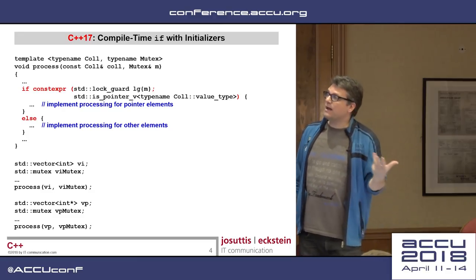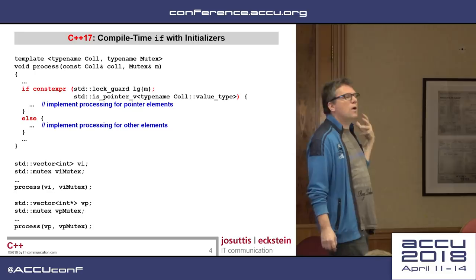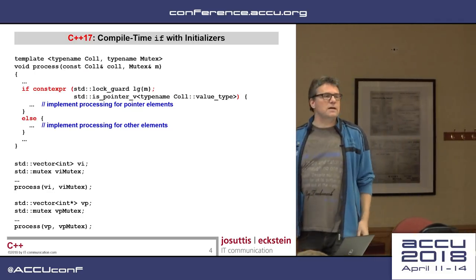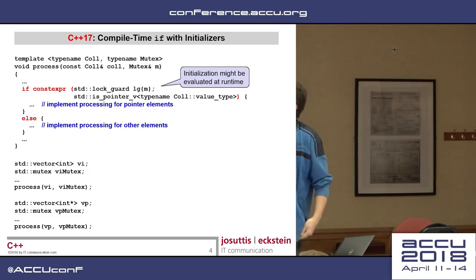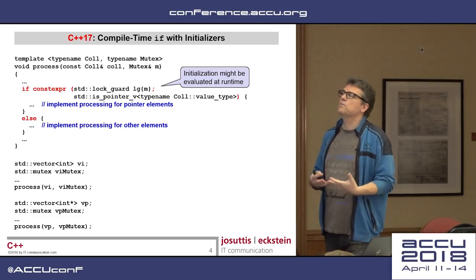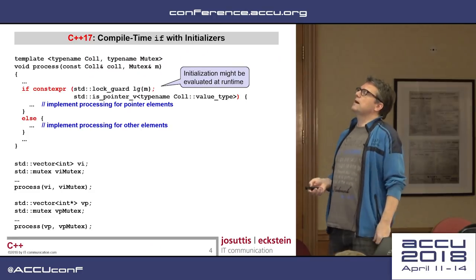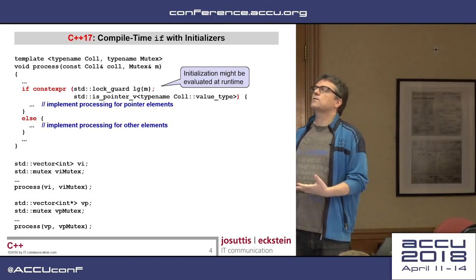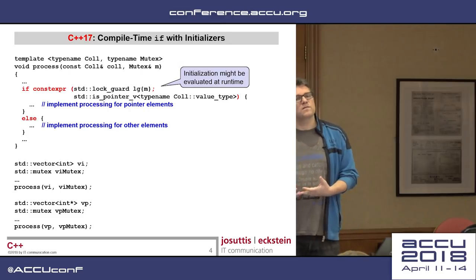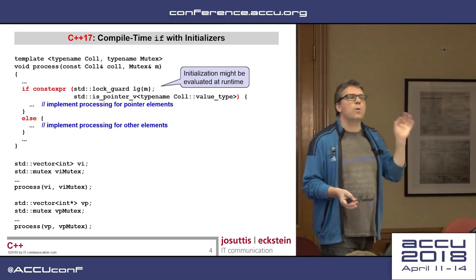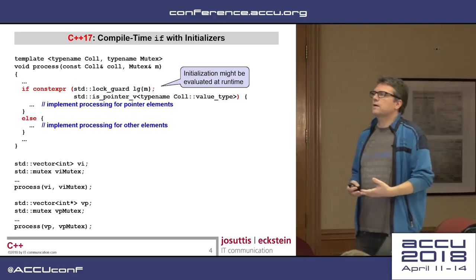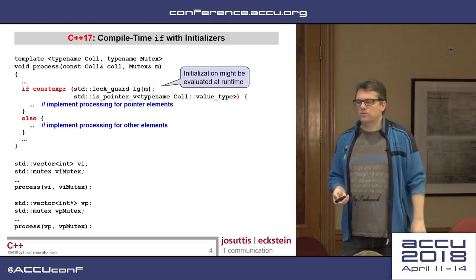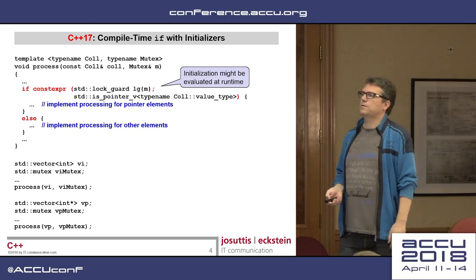But whatever I do here, I first have to lock my vector to be usable, which is done in the initialization here at the beginning in both cases. And as you can see, this might be a runtime initialization. So the check here is only the condition is a compile time condition. By the way, this if constexpr requires that it is a compile time condition. It does not fall back to a runtime condition if this is not the case.